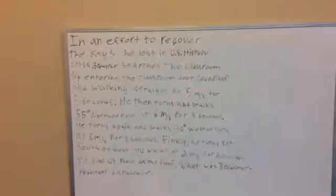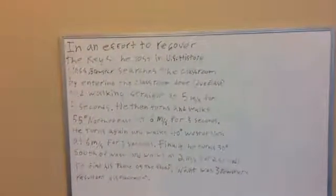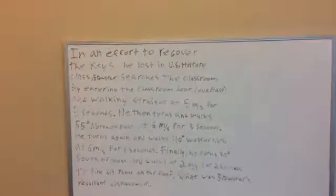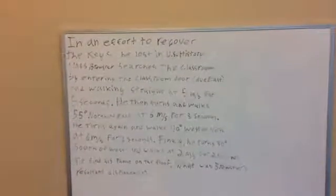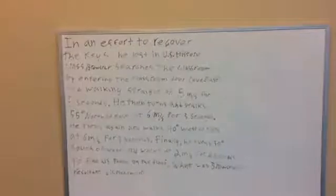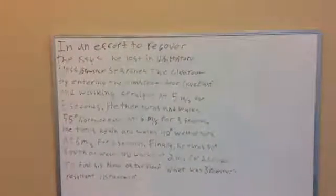He then turns and walks 55 degrees north of east at 6 meters a second for 3 seconds. He turns again and walks 40 degrees west of north at 6 meters a second for 3 seconds. Finally, he turns 30 degrees south of west and walks at 2 meters a second for 2 seconds to find his phone on the floor. What was Brewster's resultant displacement?